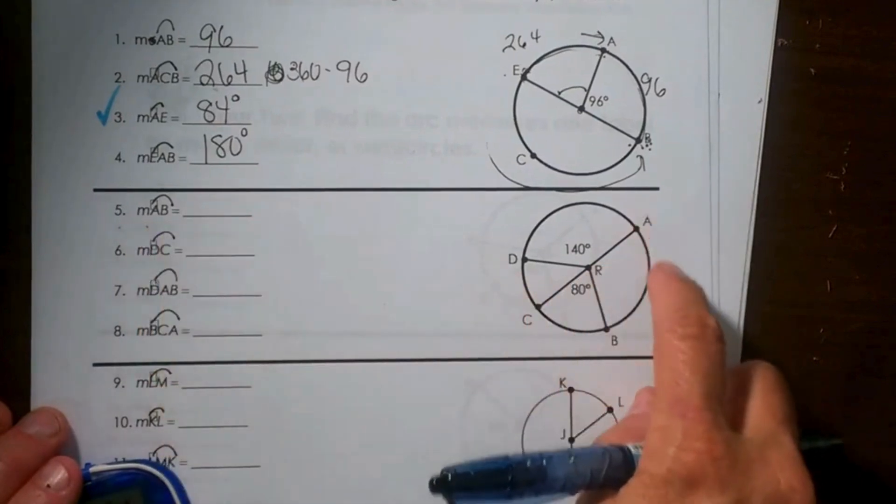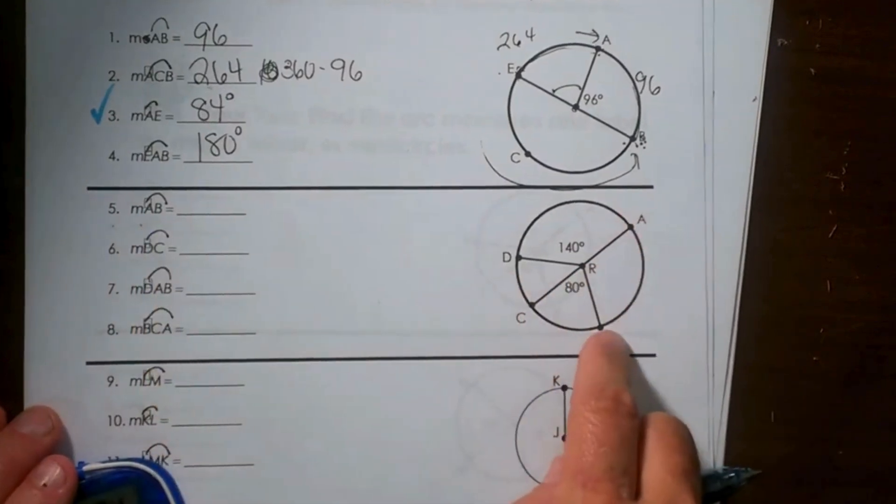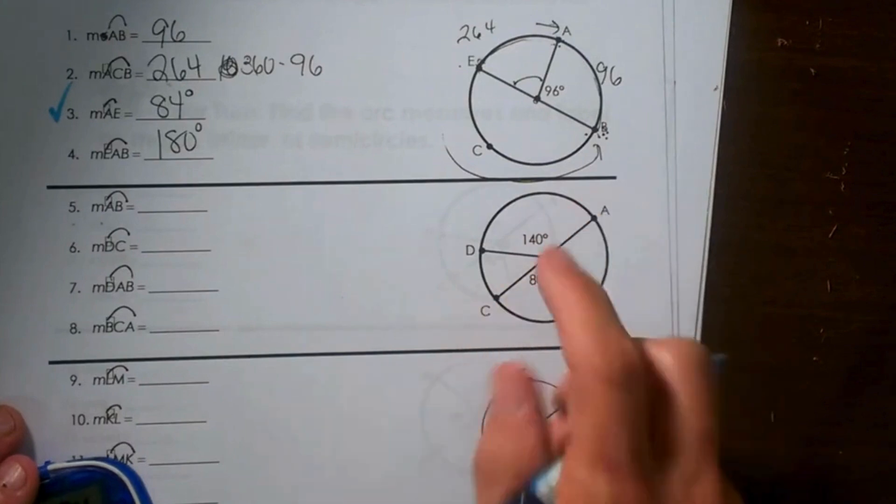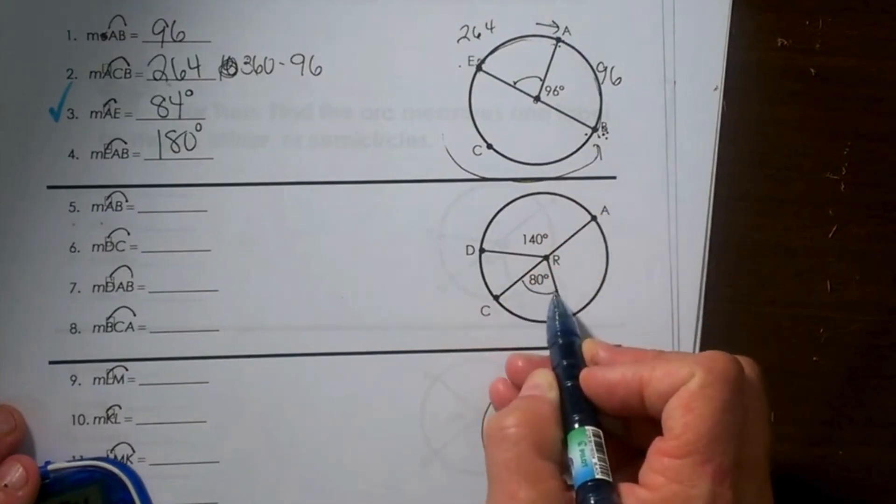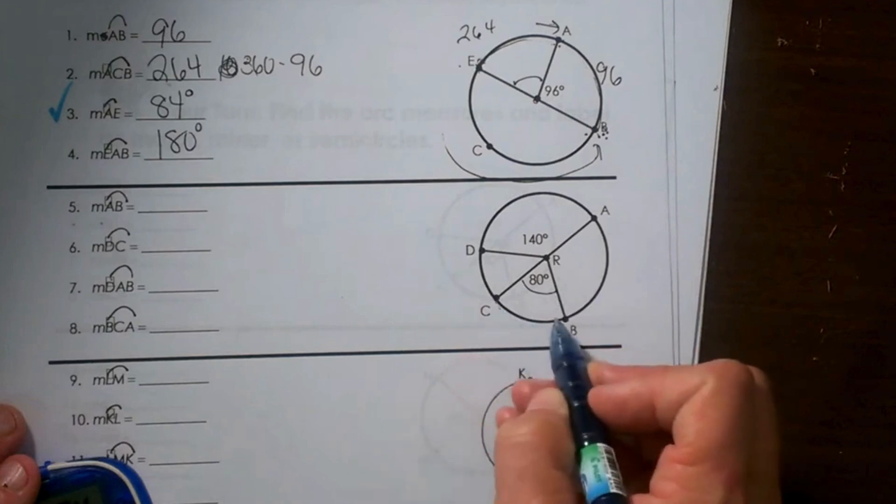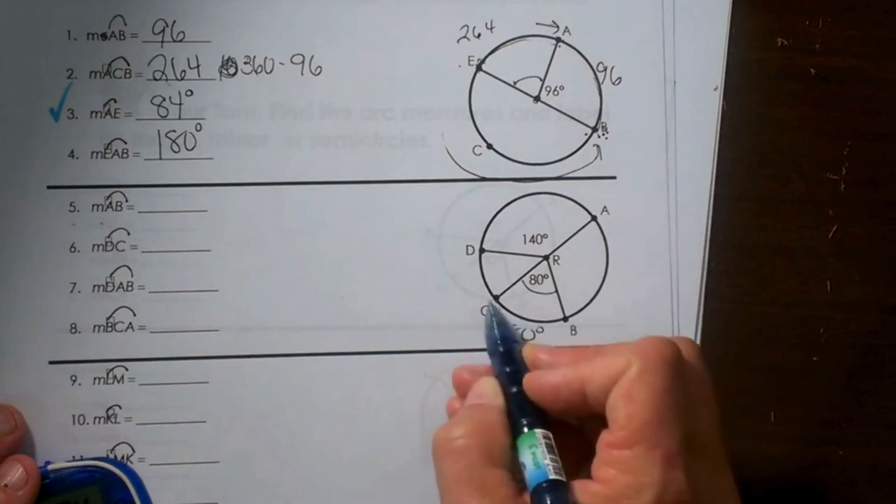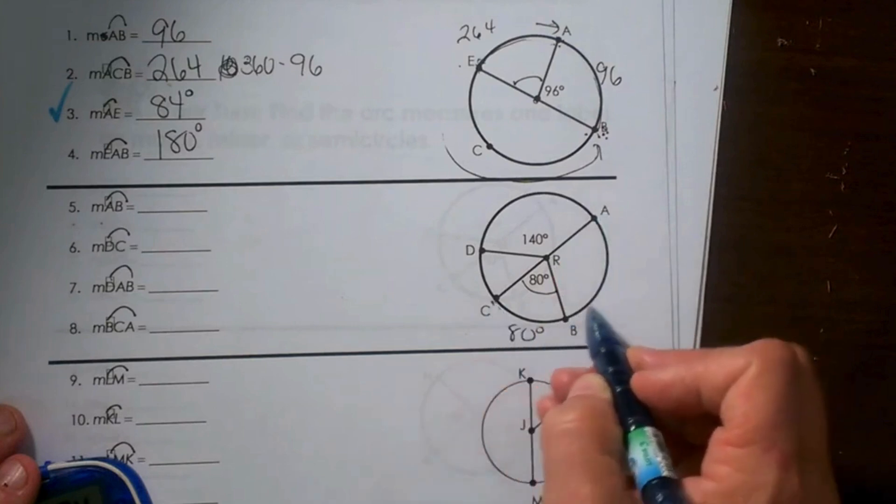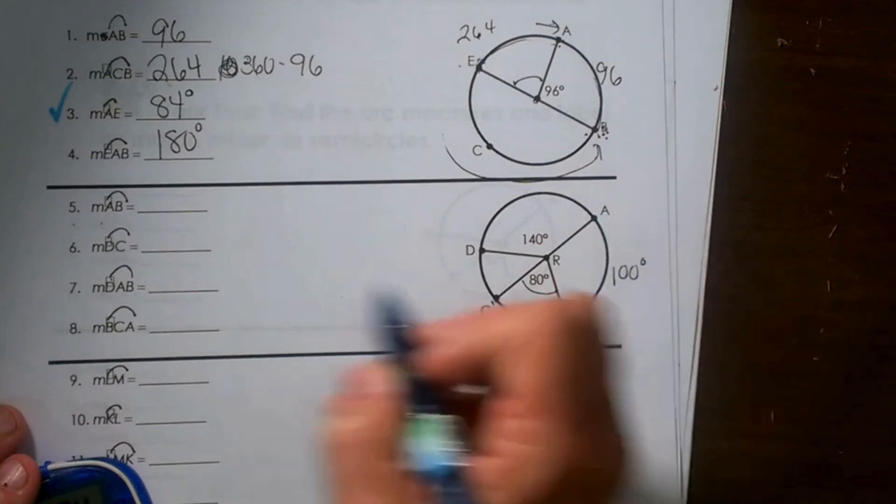Looking for AB, AB is from here to here. It is a minor arc. AC is a diameter, and we can see that this angle right here is 80, so that means this arc must be 80. And the arc from A to C through B is 180, so that means 100 is over here.